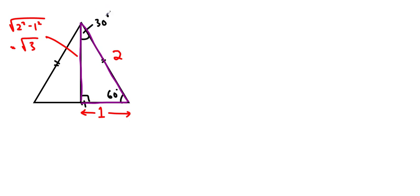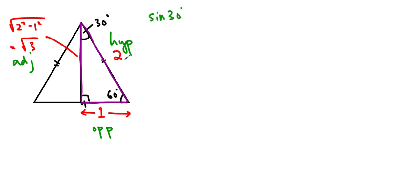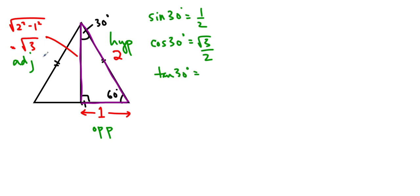We can use this to find the trigonometric ratios for 30 and 60 depending on which perspective we're looking from. Starting with the 30 degree angle, the opposite is 1, the adjacent is root 3, and the hypotenuse is 2. Sine 30 is opposite over hypotenuse, which is 1 over 2. Cos 30 degrees is adjacent over hypotenuse, root 3 over 2. Tan 30 degrees is opposite over adjacent, 1 over root 3, which ends up being root 3 over 3 when we rationalize. Cosec 30 degrees is hypotenuse over opposite, 2 over 1, which is just 2.